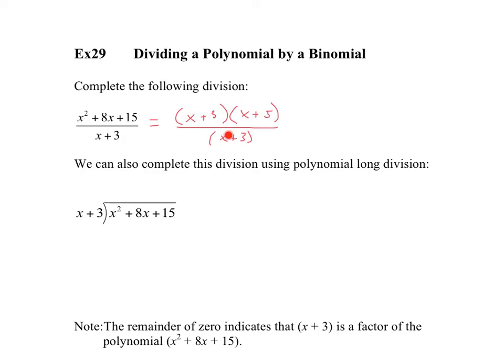Notice that there is a common factor in the numerator and the denominator, so these two factors cancel out and the final answer is x plus 5. That is one way to divide a polynomial by a binomial: completely factor, and if the factor is the same in the numerator and denominator, cancel them out.